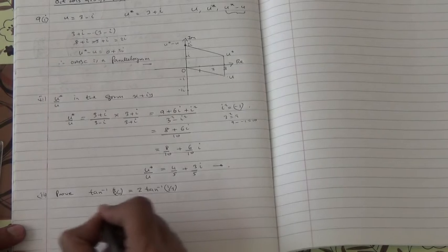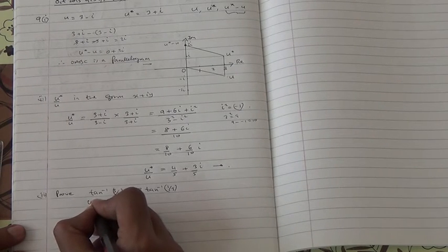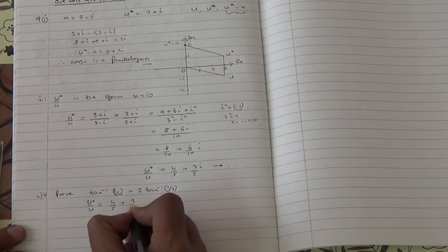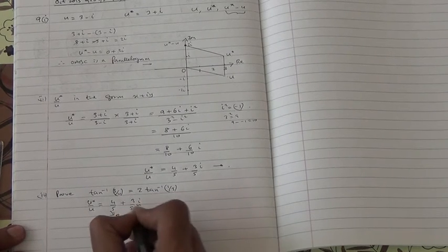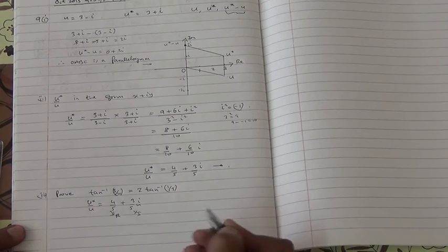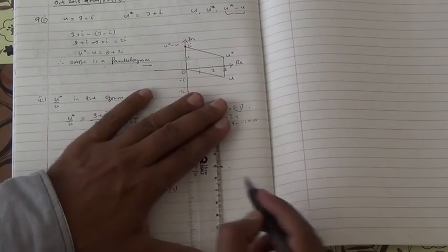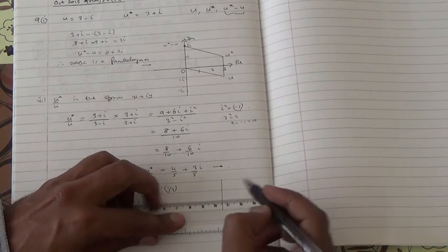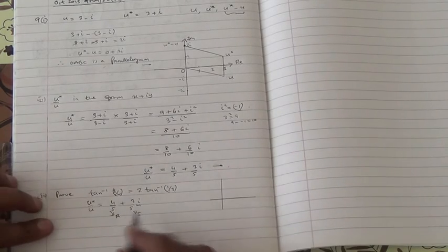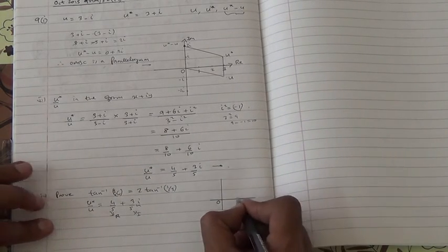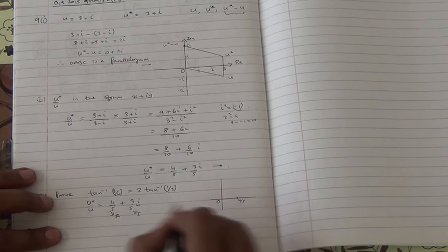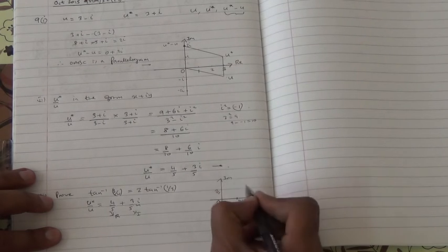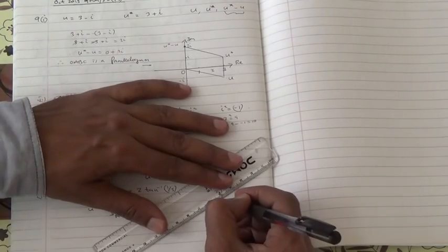First of all, I'm going to find out what is u star upon u. This is it. u star upon u. It's 4 fifth. That's the real part. Therefore, we have u star upon u. We have 4 fifth plus 3 fifth i. Now that's the real part, and that's the imaginary part. If we have to represent this on an Argand diagram again, what is going to happen? So basically, we're looking at something like this. 4 over 5 is the real part. There's a zero here. Let's just say 4 over 5 is somewhere here. And then we have 3 over 5. So let's just say 3 over 5 on the imaginary axis. So we're going to get a point here.